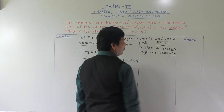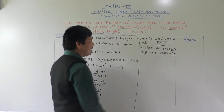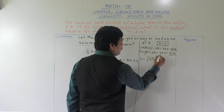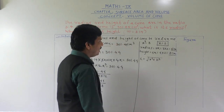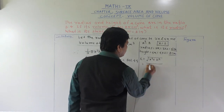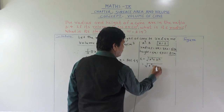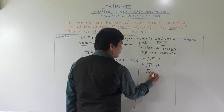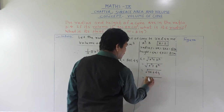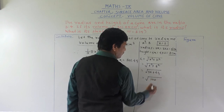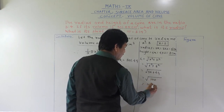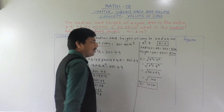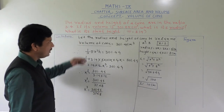Both values obtained. Now we have to find slant height. Slant height L equals under root of R² plus H². So: L equals √(6² + 8²) equals √(36 + 64) equals √100 equals 10 centimeter. So slant height is 10 centimeter.